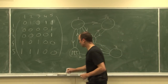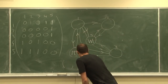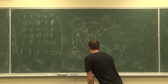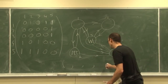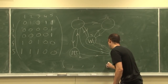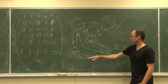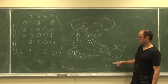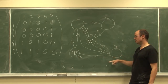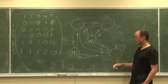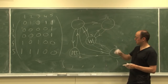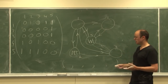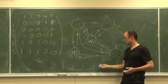The Perron-Frobenius theorem tells us how to go from a matrix like this to produce what's called a vector — in this case a one-dimensional array. It will have five numbers in it, they will add to one, and they will correspond to the five web pages one through five, giving us the rankings.